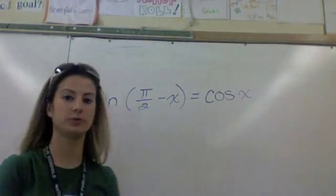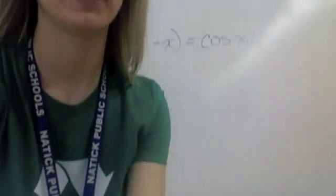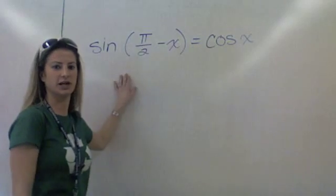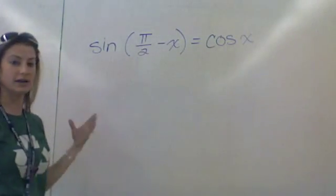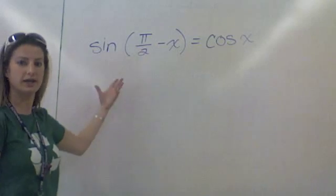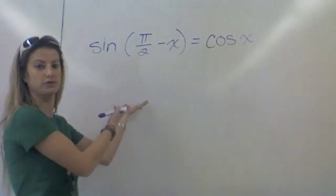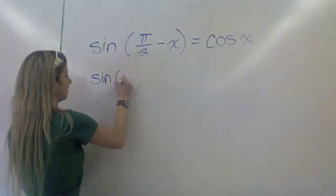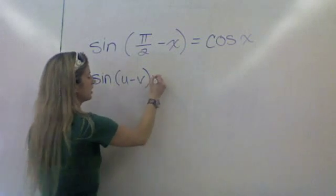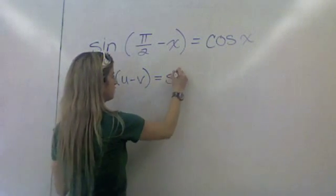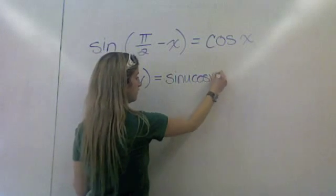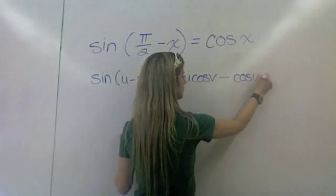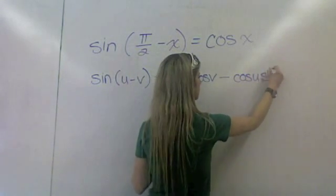So now we're going to try to prove this co-function identity. As we know, there's an identity for the sine of a difference — that's the identity that's going to help us here. The sine of u minus v equals the sine of u times the cosine of v minus the cosine of u times the sine of v.